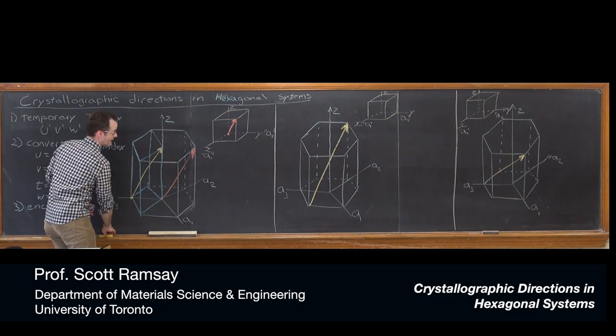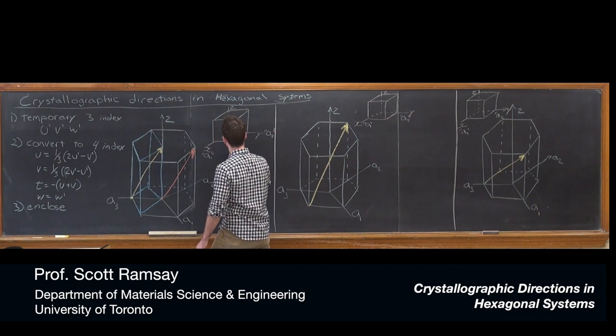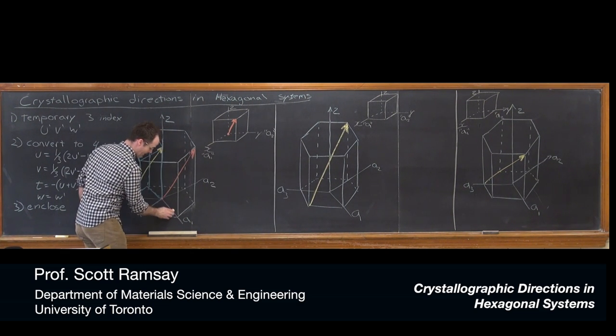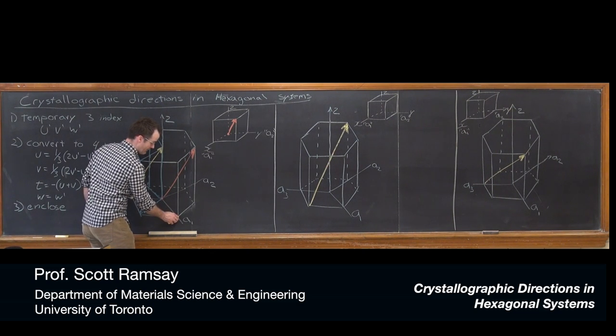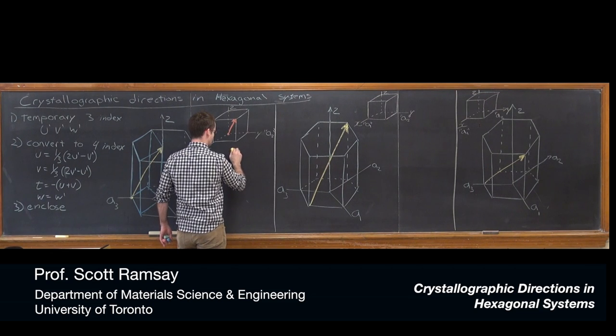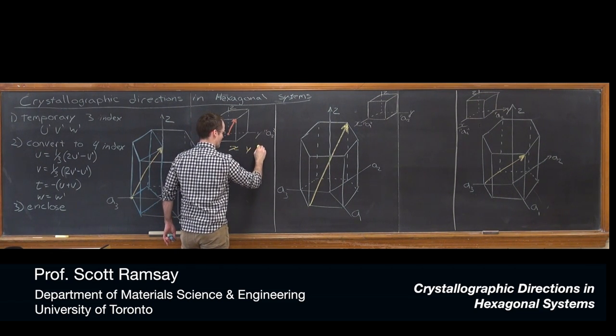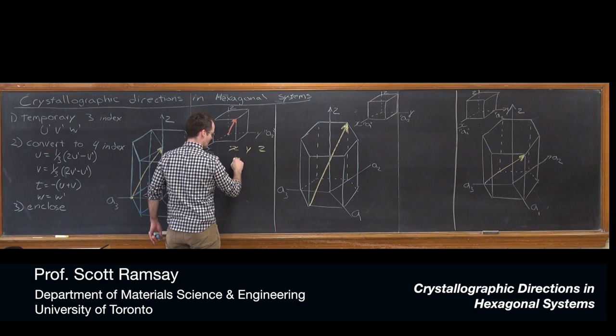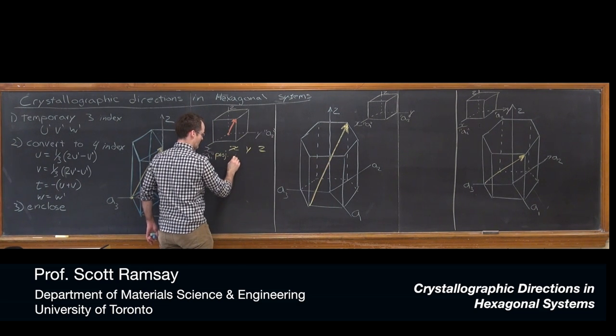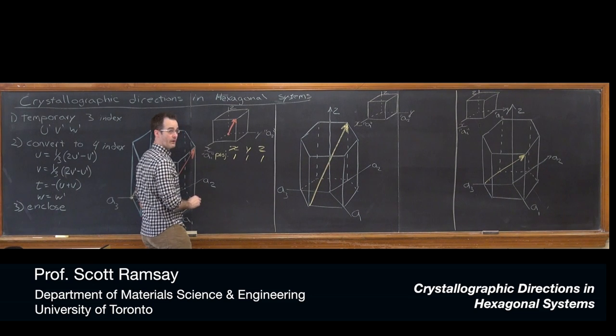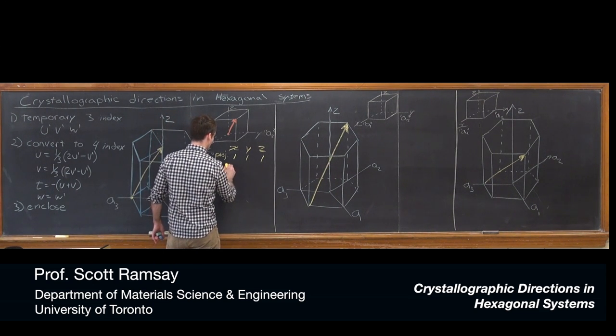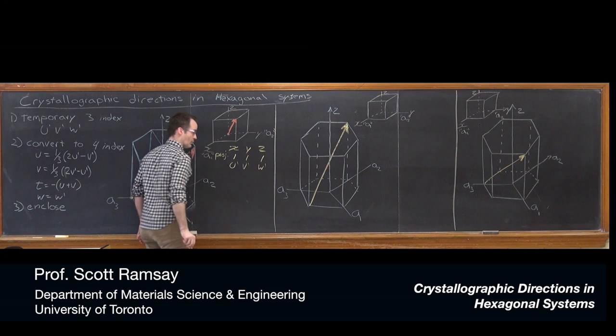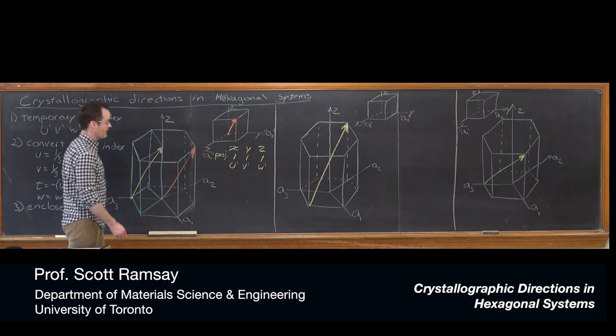Without further ado, I can go ahead and solve this. This vector originates at the conventional origin and travels one in the A1 direction, one in A2, and one in Z. The projections onto X, Y, and Z are 1, 1, and 1. There's no reduction necessary. Our enclosure would just be [1,1,1] in square brackets. That's our three-axis system.